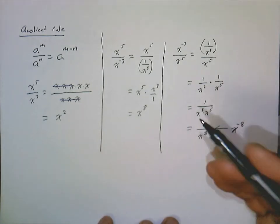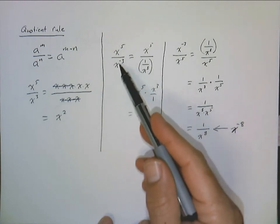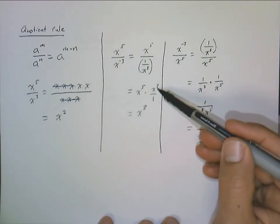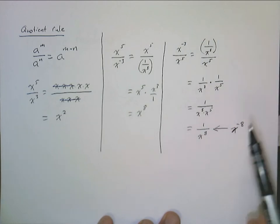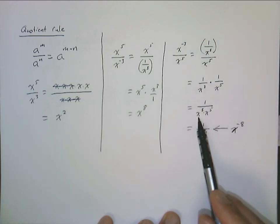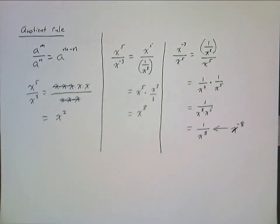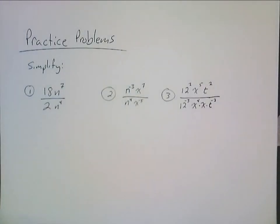A useful shortcut: a negative exponent in the denominator becomes a positive exponent in the numerator, and a negative exponent in the numerator becomes a positive exponent in the denominator. Once you understand this well enough, you just start thinking in those terms. Now I'll leave you with a couple of practice problems to try.